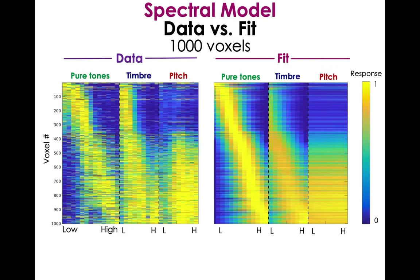Looking at the data and fit across many voxels — left panel is data, right panel is fit — for pure tones and timbre there's a low to high center frequency order being picked up on with an indication of tuning. But for pitch we don't see evidence of this tuning. Voxels tuned to low frequencies are not responding to pitch at all, and voxels tuned to high frequencies are predicted to respond to all pitch stimuli roughly equally — again showing a sort of step function, similar to what we saw in the representational similarity matrices.